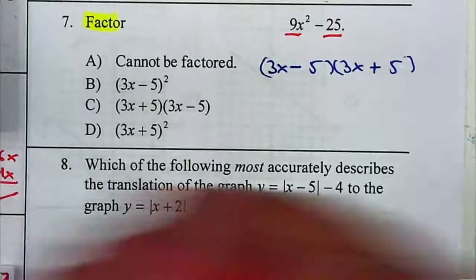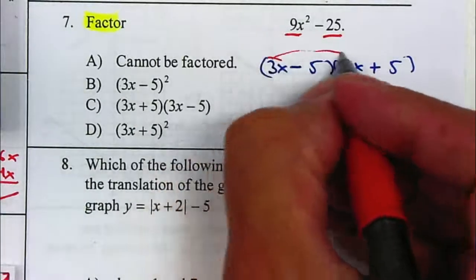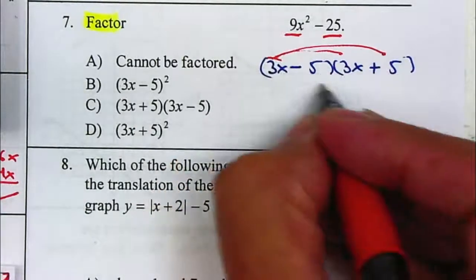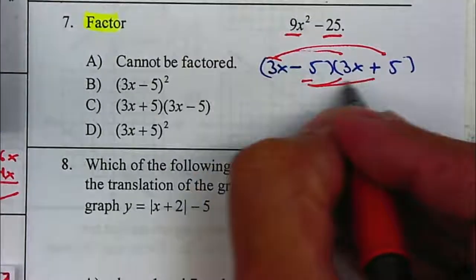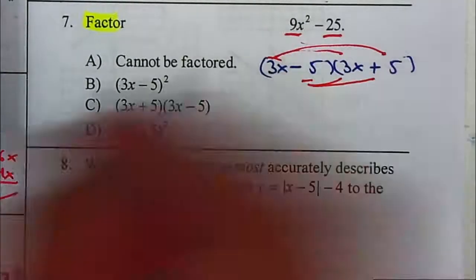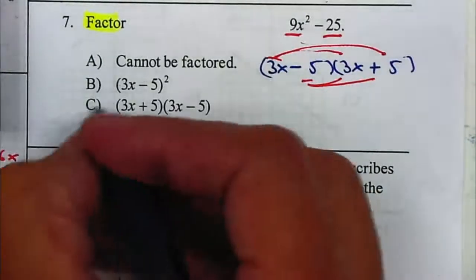And if you go and check it and just multiply everything out, distribute the 3x to both and the negative 5 to both, you should end up with exactly the same thing. But in this case your answer will be letter C.